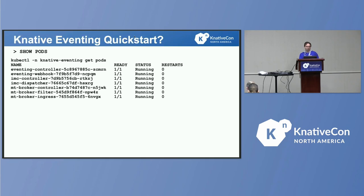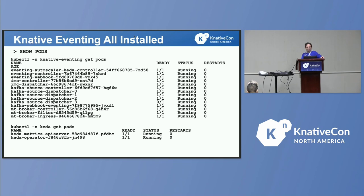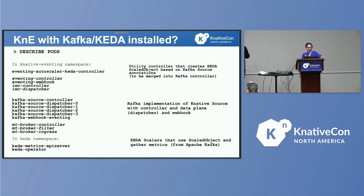This is what you get when you install quick start — just a listing you can look at later on slides. This is literally what is running in your cluster when you install quick start for Knative eventing: some controllers doing things when you tell them to. And this is what you get when you actually install something more — it is running KEDA and Kafka source. Kafka source is running multiple dispatchers that can be configured to run in multiple availability zones, and KEDA is running in another namespace.